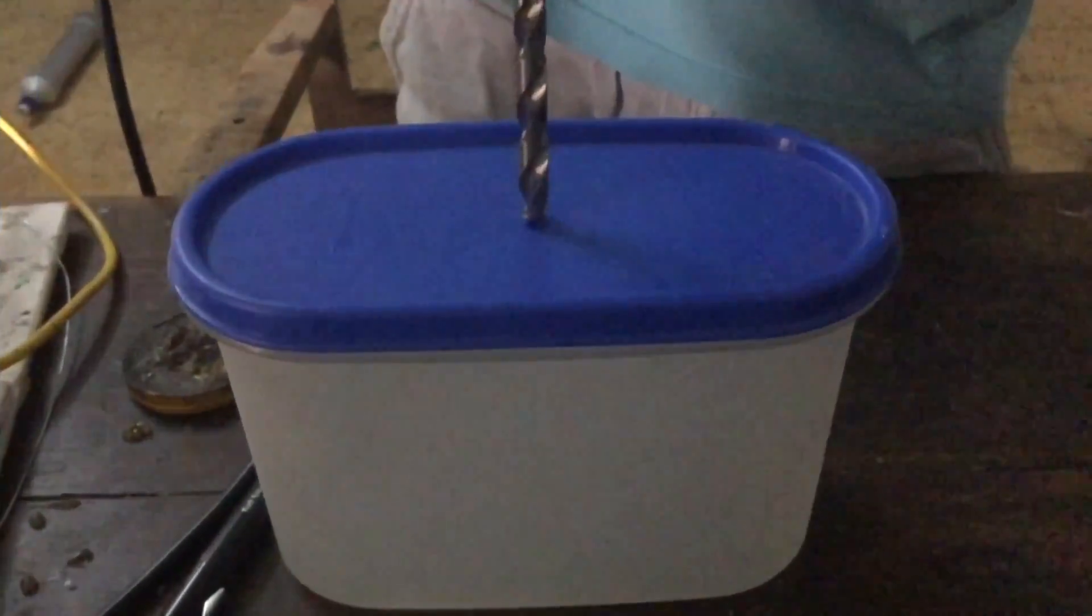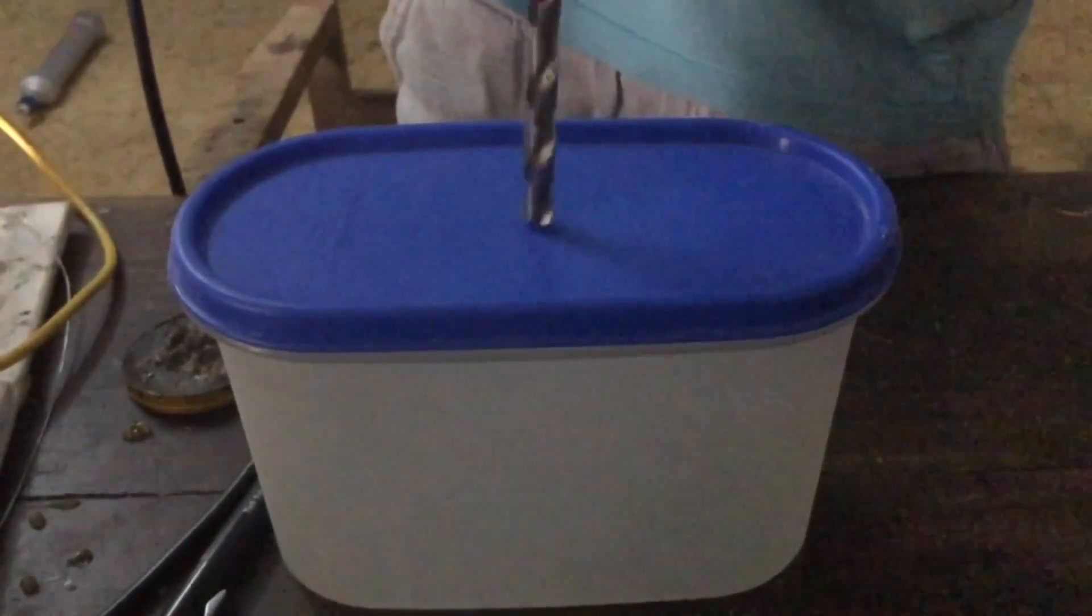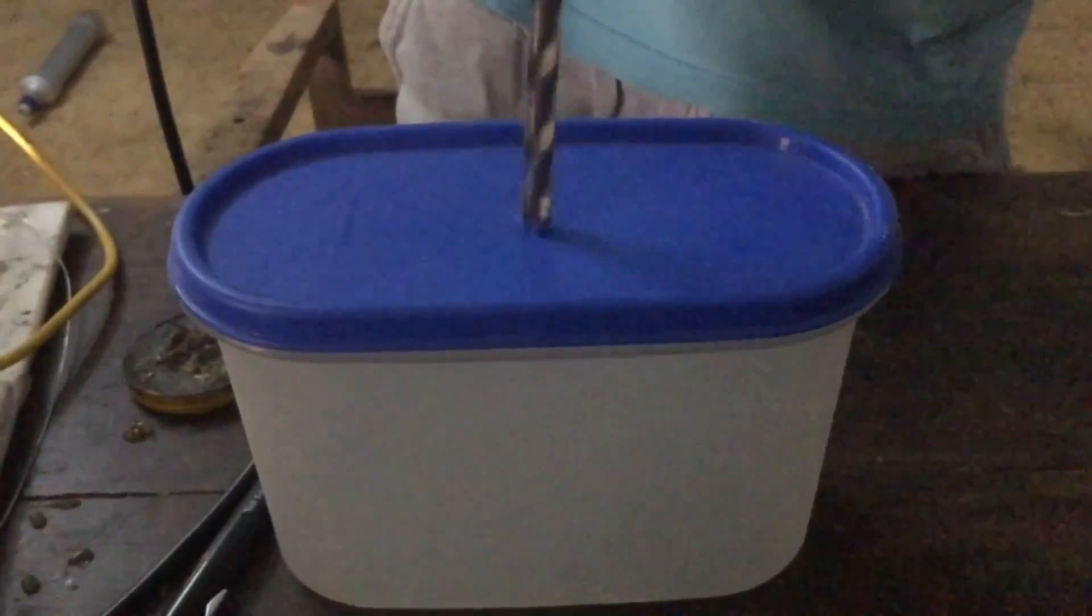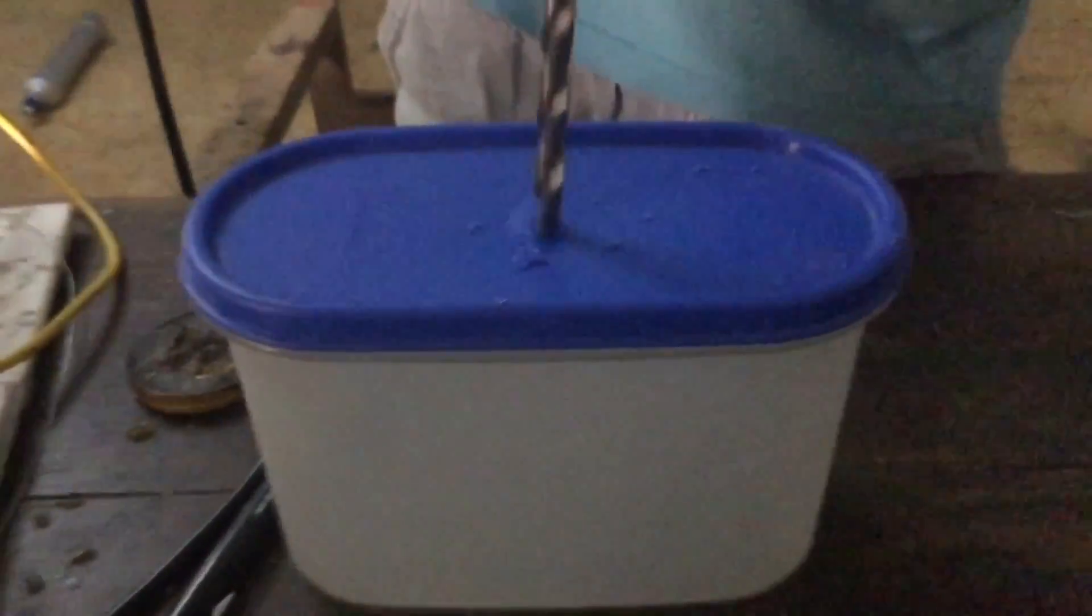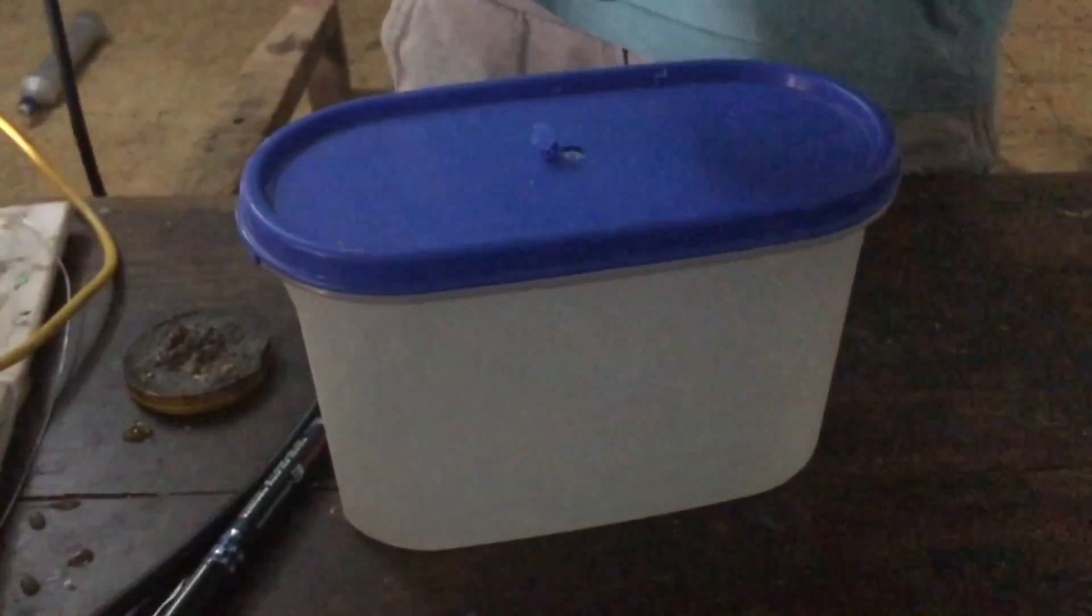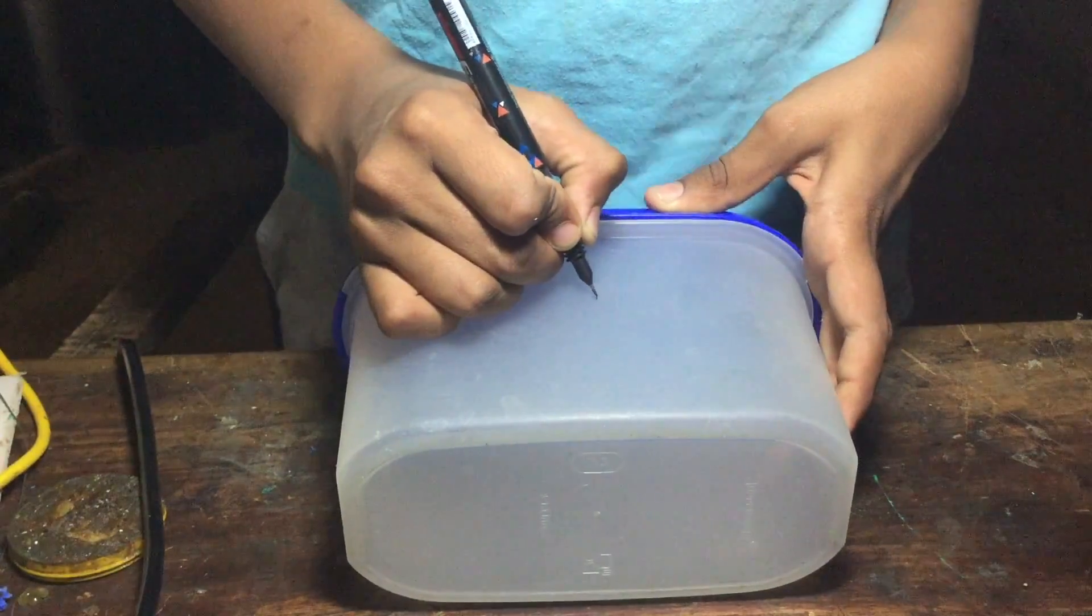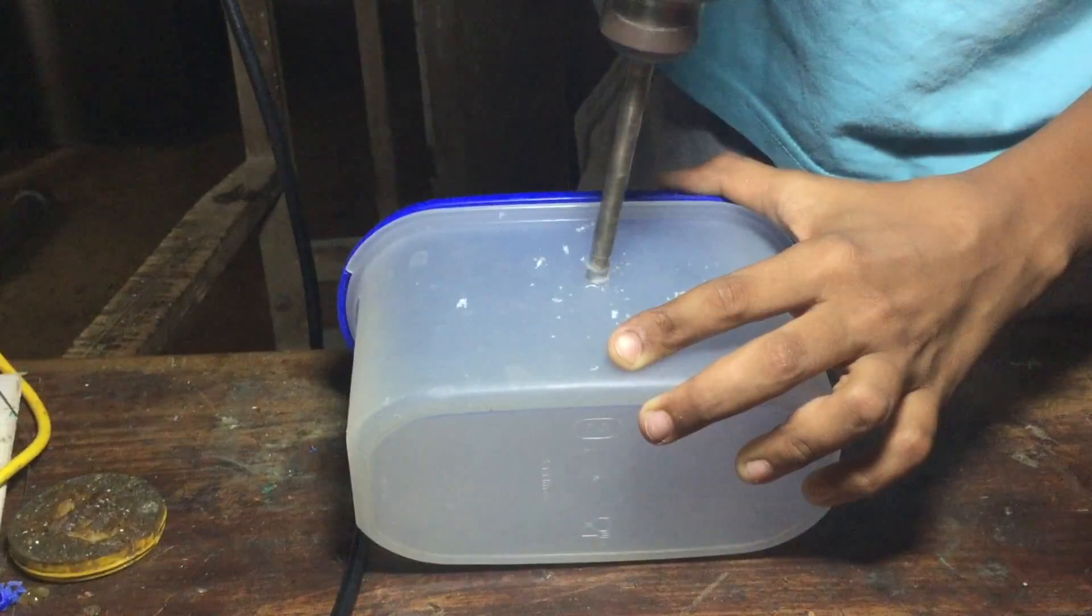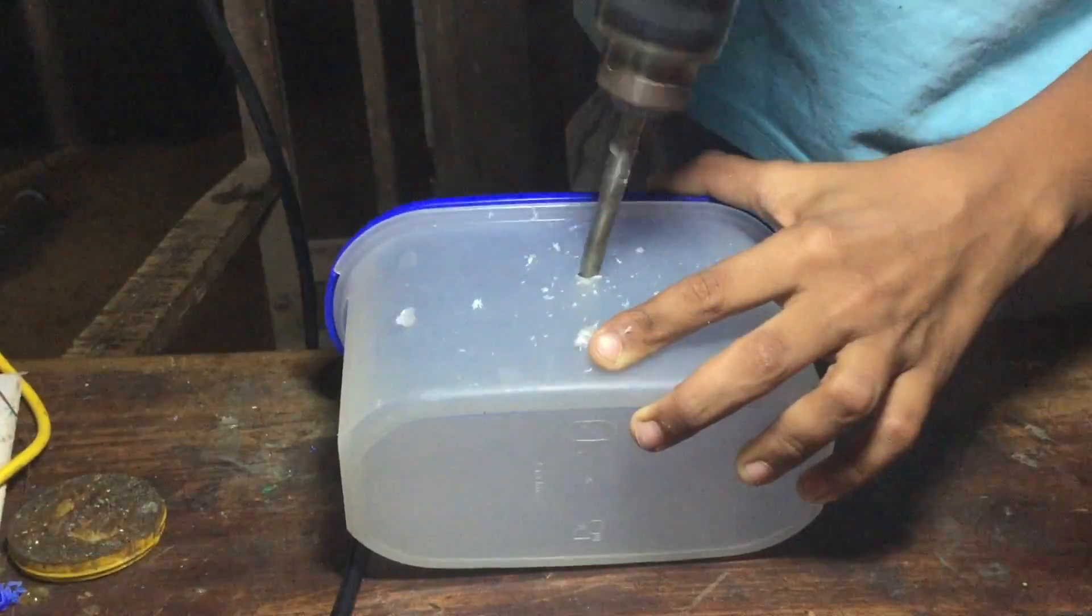Alright. First thing first. Take your lid and drill a hole in the center of it. It does not matter whether it is exactly in the center or roughly. It just needs to be centered roughly. Oh, mishaps. Sorry for that. Now, make a mark like that and drill it out, of course.